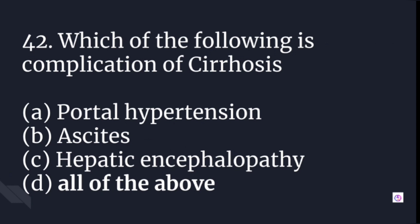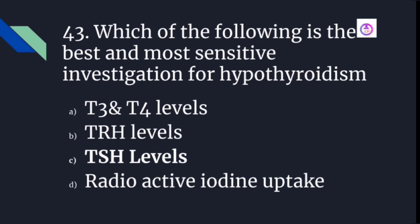Complications of cirrhosis include portal hypertension, ascites, and hepatic encephalopathy — the answer is all of the above. The best and most sensitive investigation for hypothyroidism is TSH, i.e., thyroid stimulating hormone levels.